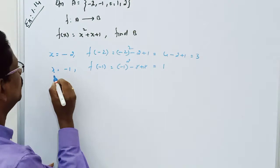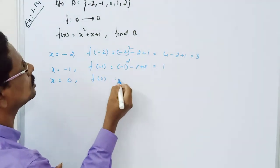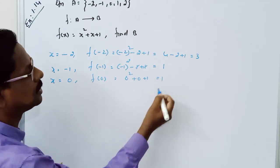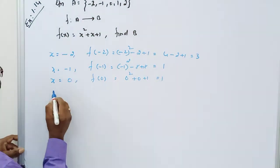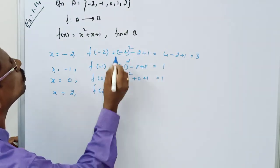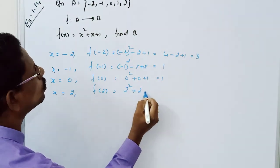When x equals 0, f(0) equals 0² + 0 + 1, which is 1. When x equals 2, f(2) equals 2² + 2 + 1.